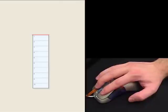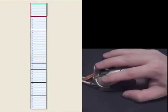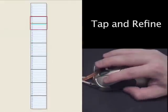In a multi-phase study, we explore the design potential of unipressure and dual-pressure augmented mice for discrete target selection tasks and introduce the unipressure click and dual-pressure tap and refine modes of selection.